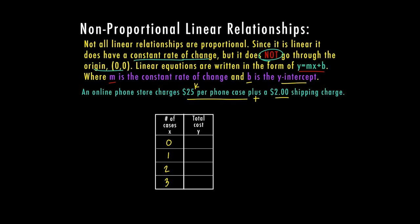We are paying $25 per phone case. In the last couple of videos where we talked about proportional relationships, that's going to be our constant rate of change. That would be our K. In this case, this is our M. K and M are interchangeable. You're going to start seeing M more and more as you get into eighth grade and algebra.